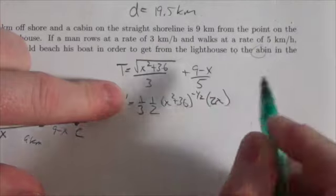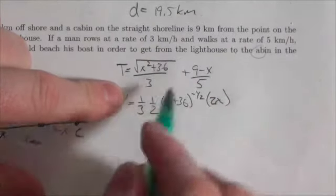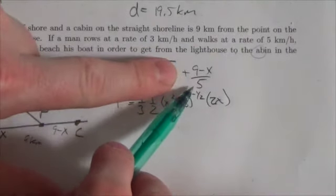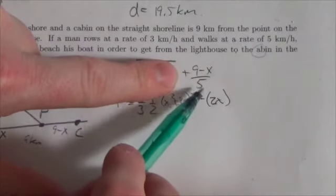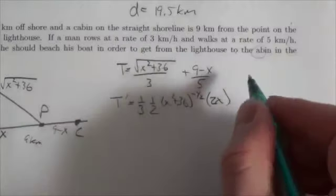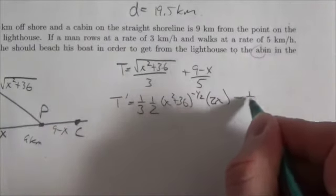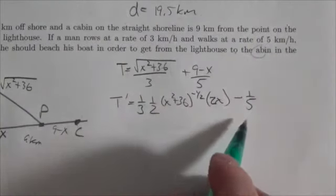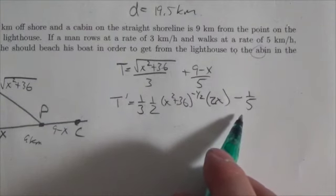And then over here, if I distribute that five, I get nine over five minus x over five. Nine-fifths is just a constant, the derivative of that will be zero, so I'm gonna be left with negative one-fifth for that second term here, which should strike us as a little bit familiar because in that previous question it was basically the same thing.